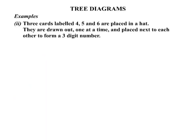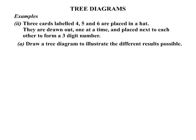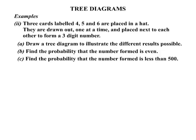Our second example now. Three cards labelled 4, 5 and 6 are placed in a hat. They are drawn out one at a time and placed next to each other to form a three-digit number. Now again we need to draw a tree diagram to illustrate the different results possible. Then we are going to find the probability that the number formed is even. And finally find the probability that the number formed is less than 500.